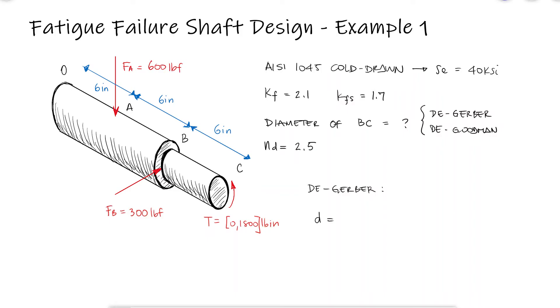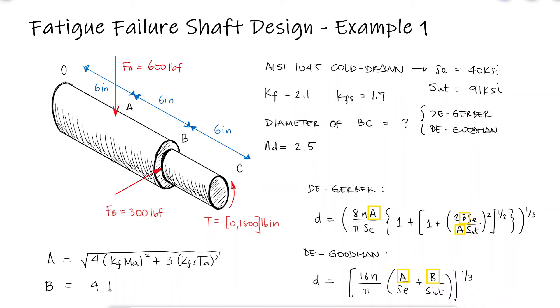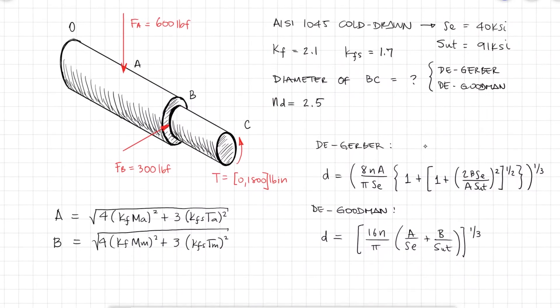From that main video, we know that we can solve for the design diameter from the factor of safety equation from both criteria. Looking at these expressions, we know that we need to look up the ultimate strength, that we'll use the design factor as the factor of safety, and that for the expressions A and B that we derived in the main video, we're gonna need to find the mean moment and torque and the alternating moment and torque, besides the given fatigue stress concentration factors.